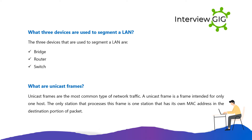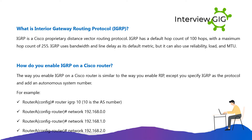Unicast frames are the most common type of network traffic. A unicast frame is a frame intended for only one host. The only station that processes this frame is the station that has its own MAC address in the destination portion of the packet.